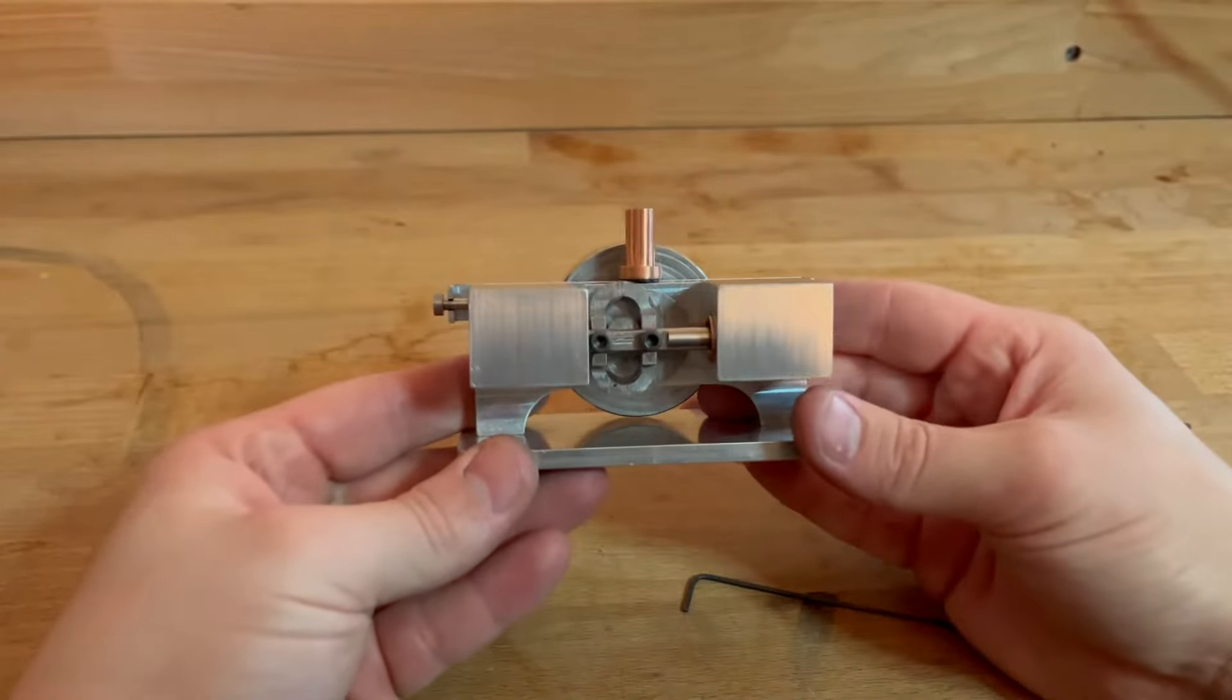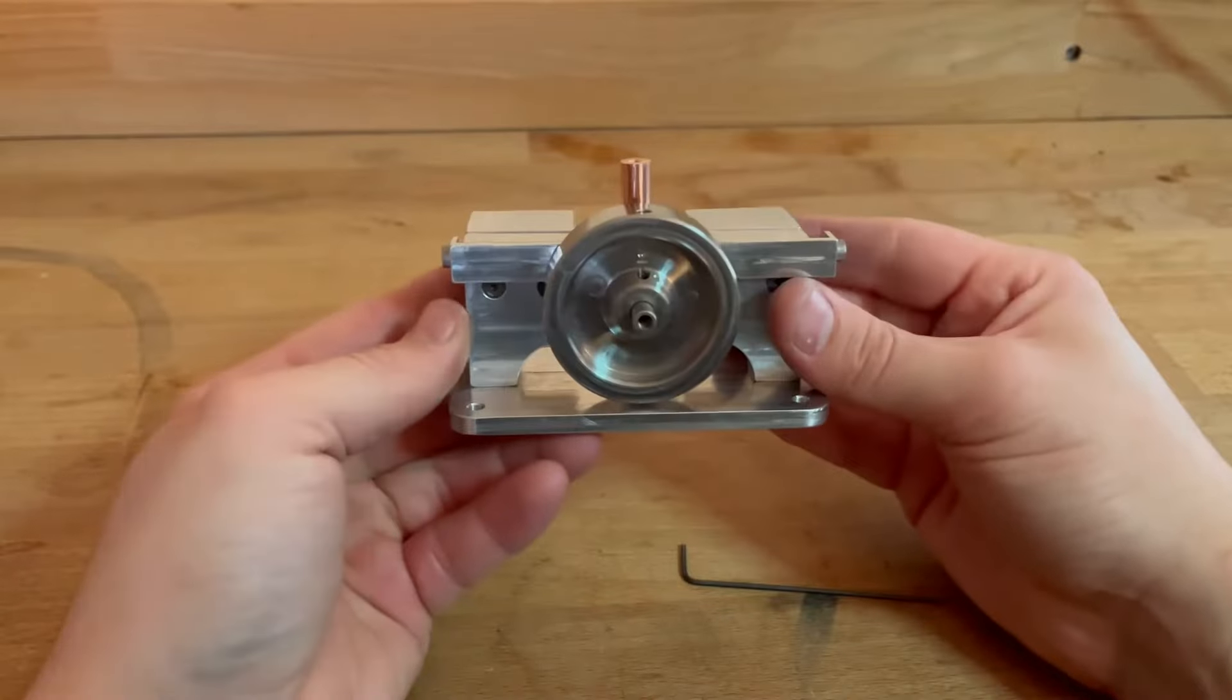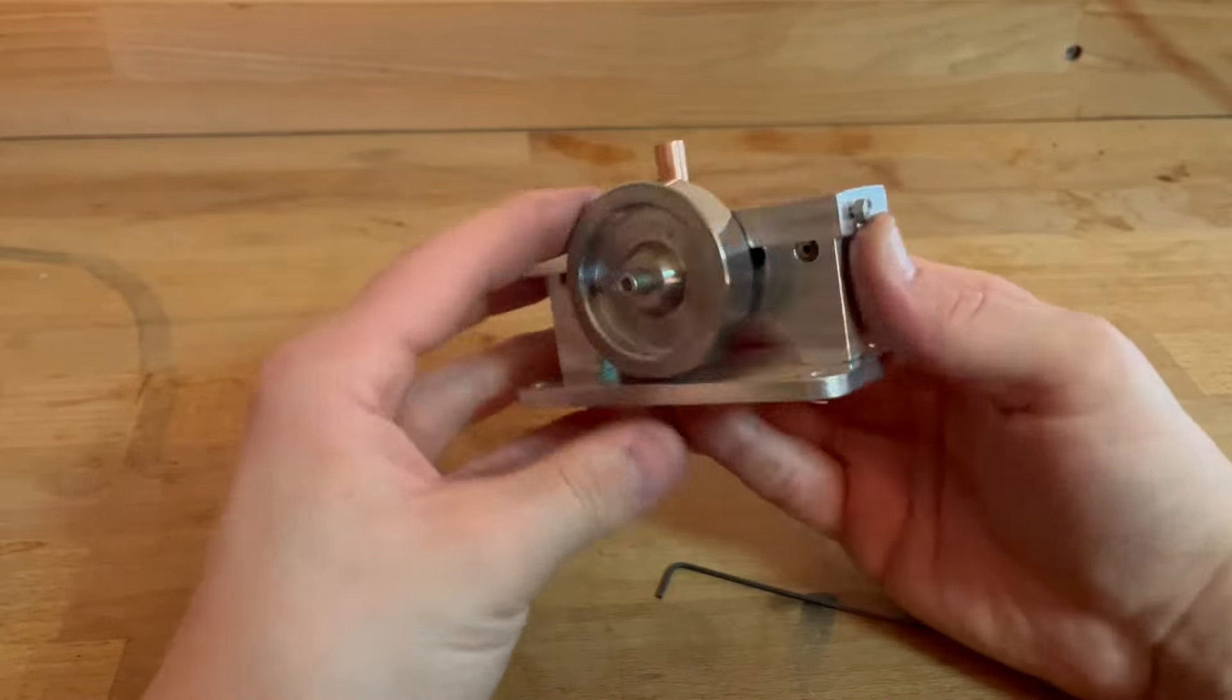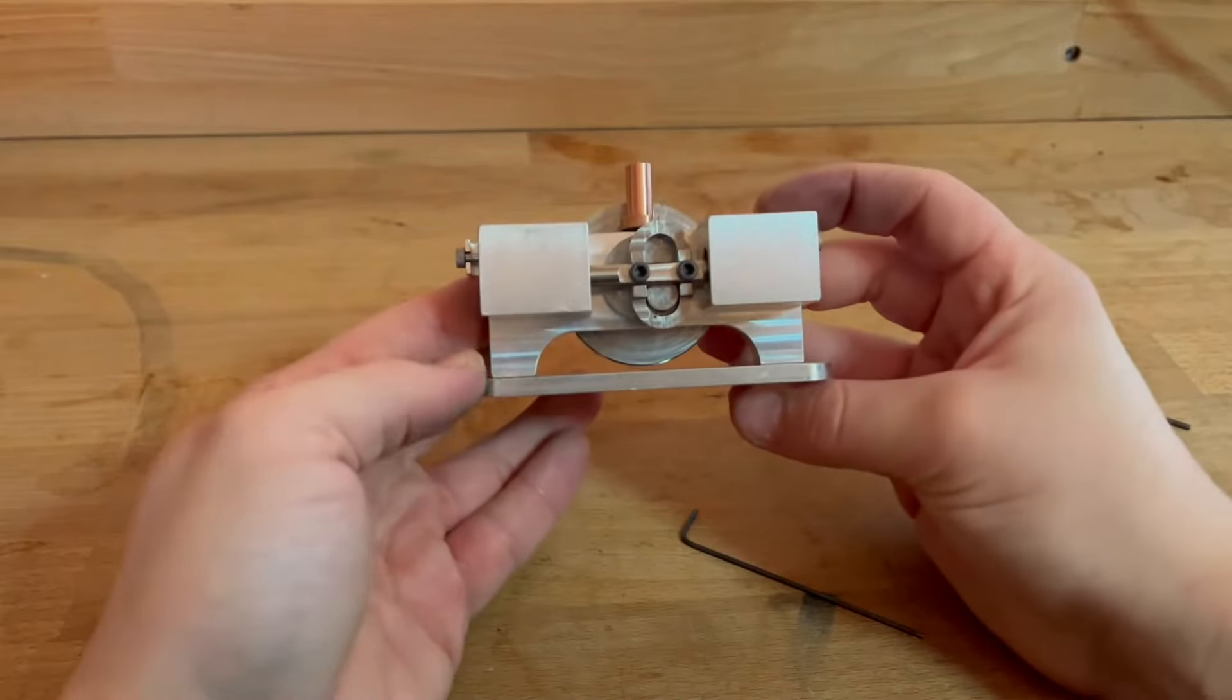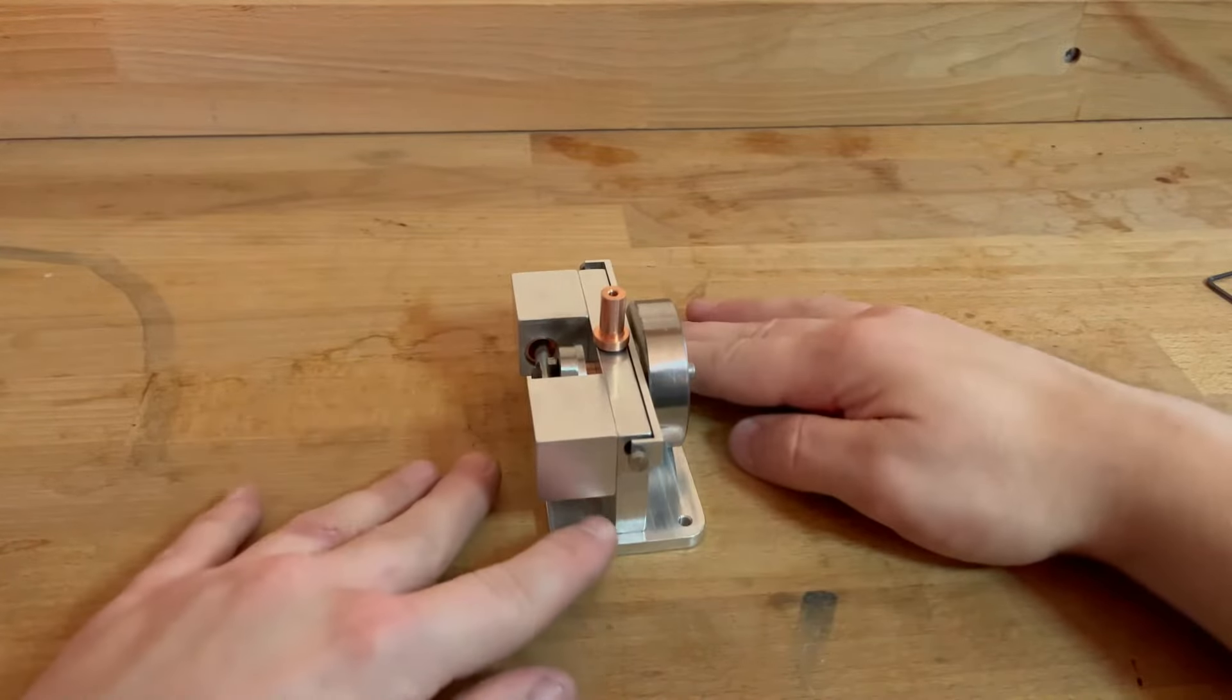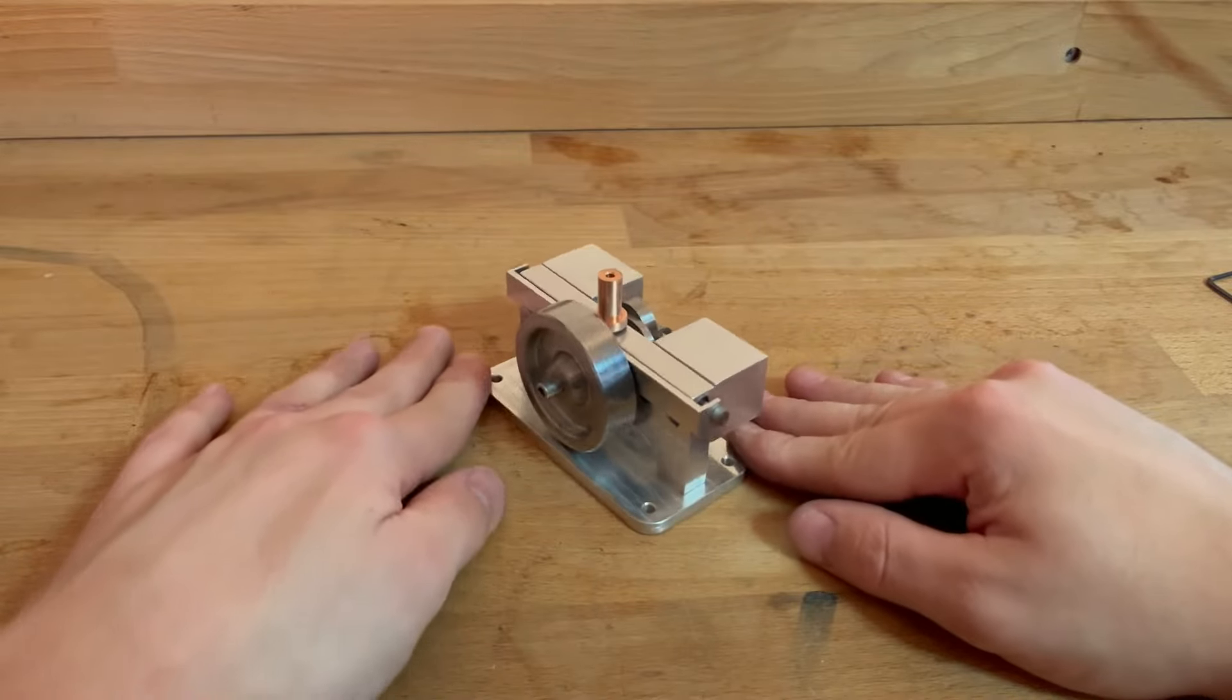And now we have a fully assembled double cylinder steam model. I am yet to paint it. I'm gonna paint the flywheel inside red. But there it is, there is the little steam cylinder double cylinder engine all assembled.